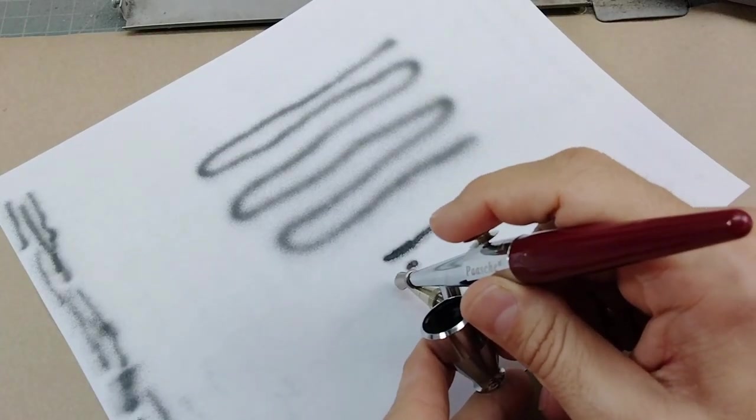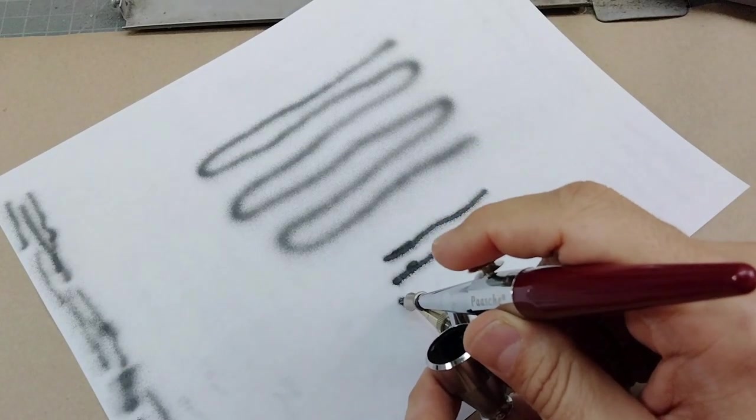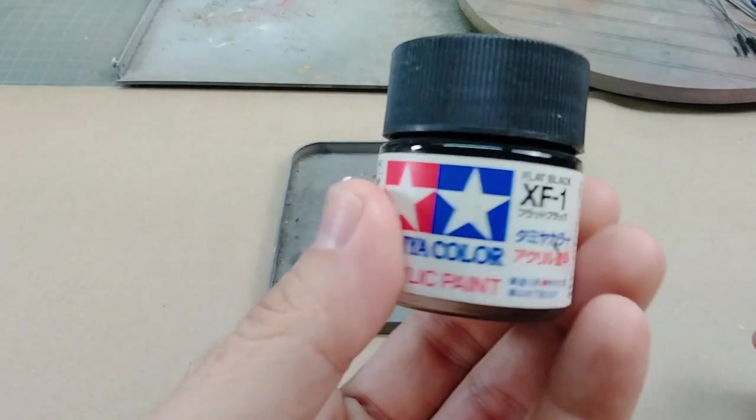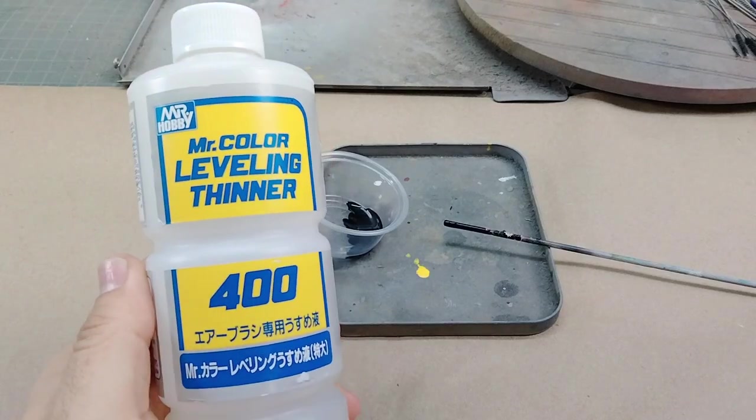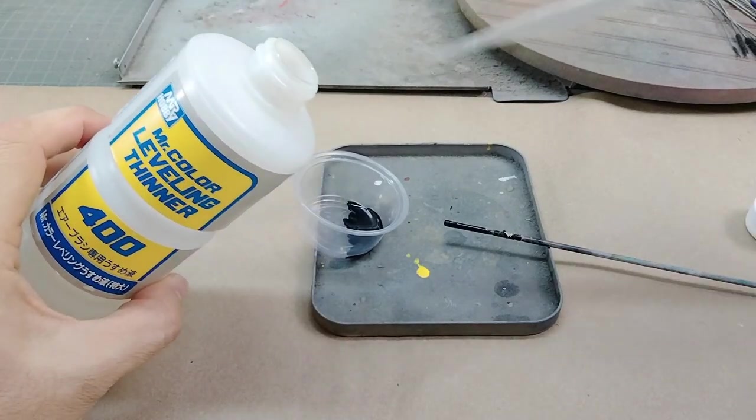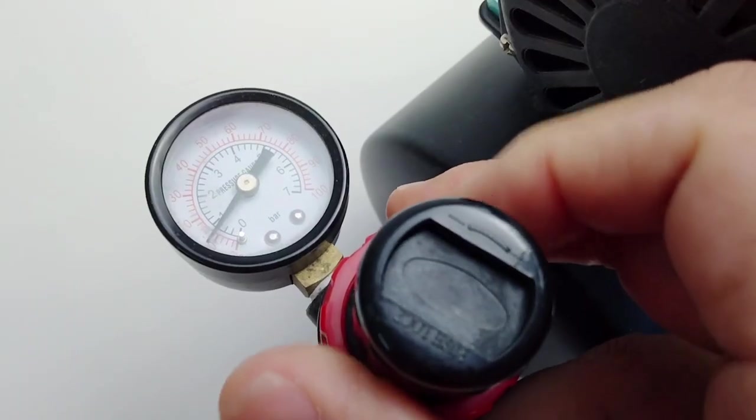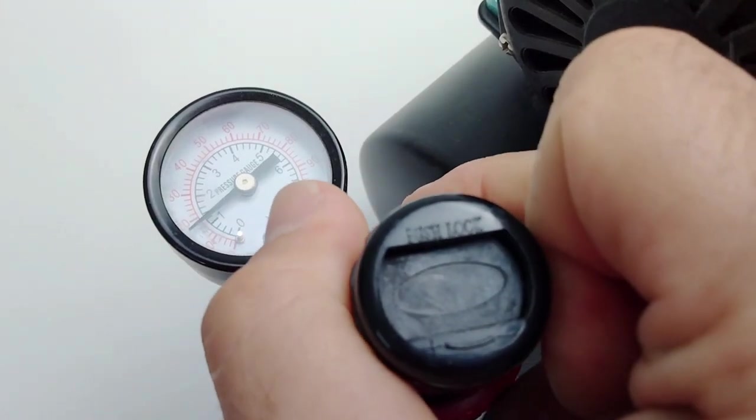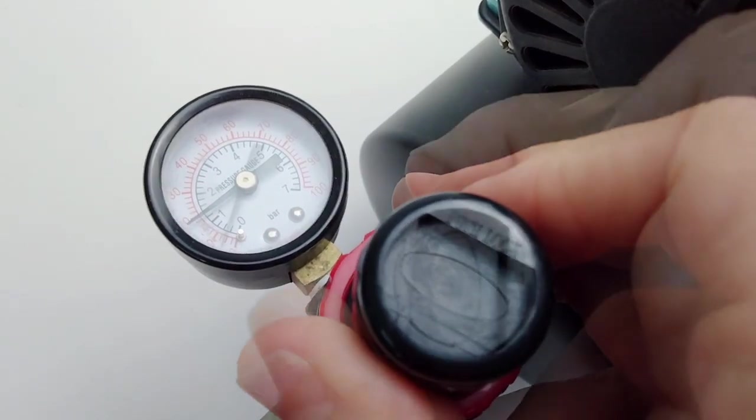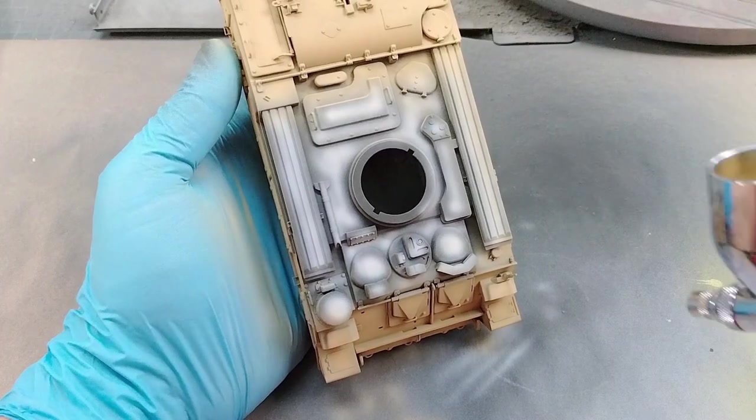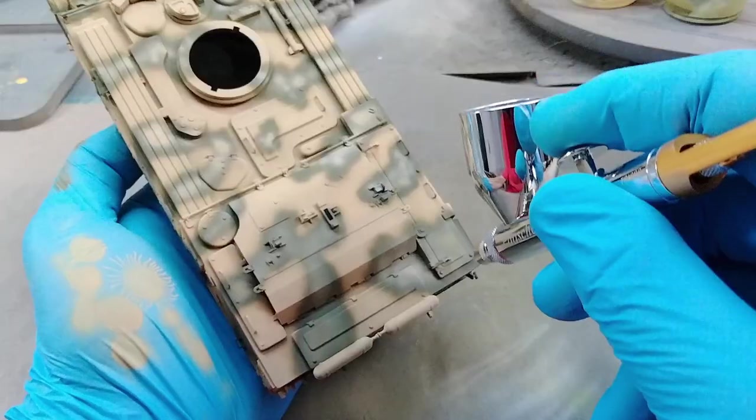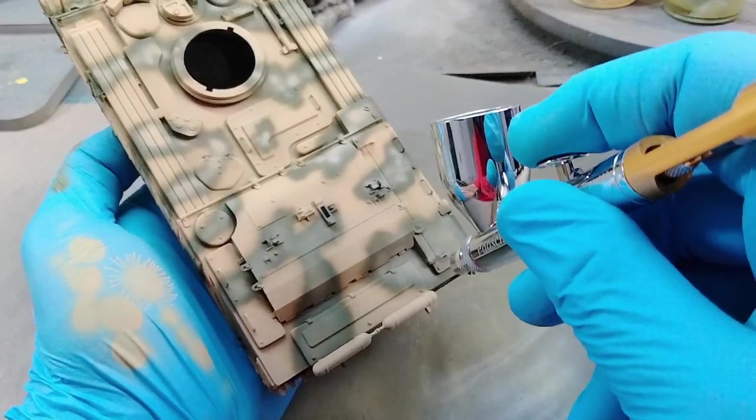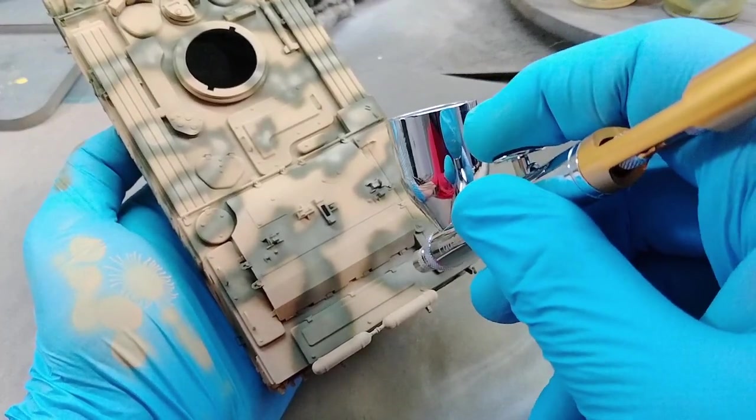In testing all the airbrushes, I try to keep everything consistent. I use the same paint, Tamiya black, and the same thinner for all the airbrushes, mixing the paint approximately 50/50. When testing, I did two pressure settings, one at 20 psi and one at 10. Twenty is typically what most airbrushing is done at, somewhere between 15 and 20. Ten is when you're doing high detail work and you need thinner paint but at lower pressure.